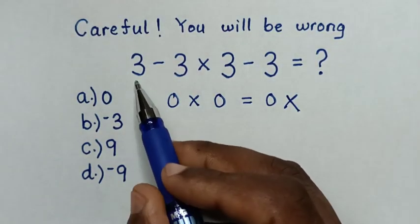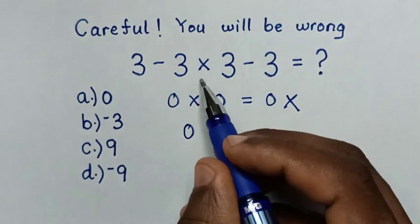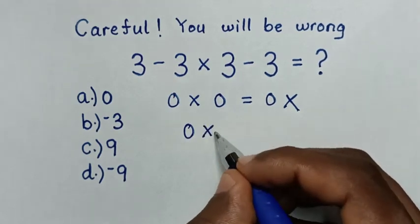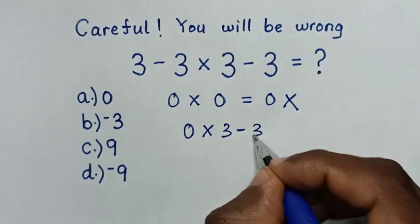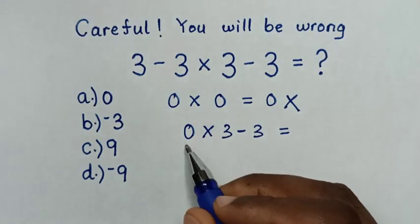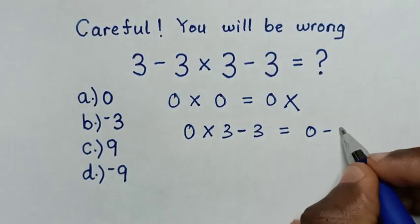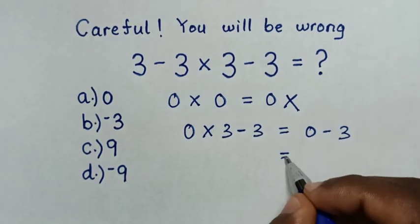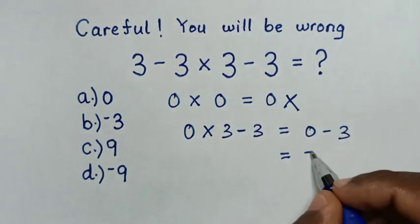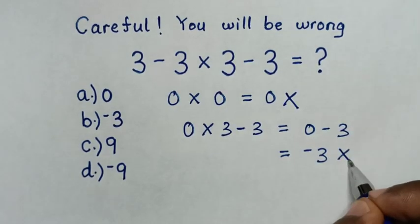If you solve 3 minus 3 is 0, then times 3 minus 3 times 3 minus 3, so it is equal to 0 times 3 is 0, then minus 3, then it will be equal to 0 minus 3 is negative 3. Also this is wrong.